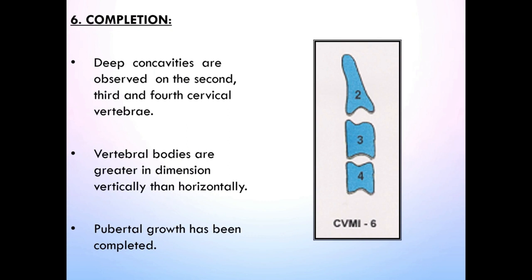Stage 6 is Completion. Deep concavities are observed on C2, C3, and C4. Vertebral bodies are greater in dimension vertically than horizontally. Pubertal growth has been completed. The concavities at the lower borders of C2, C3, and C4 are still evident. At least one of the bodies of C3 and C4 is rectangular vertical in shape; others are squared. The peak in mandibular growth has ended at least two years before this stage.